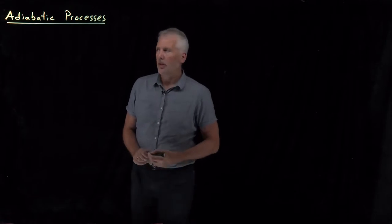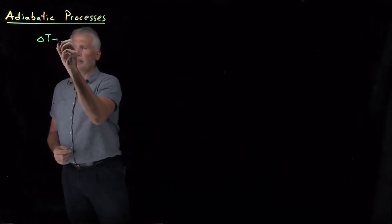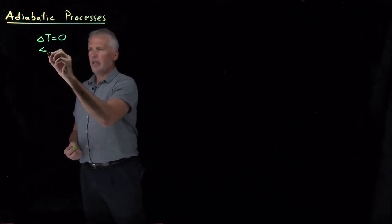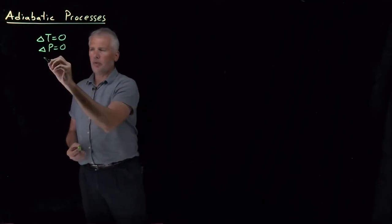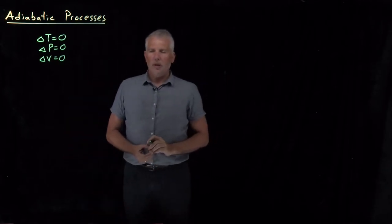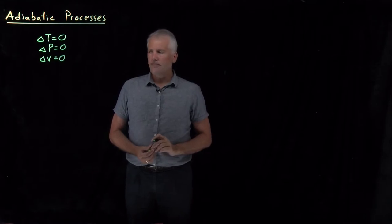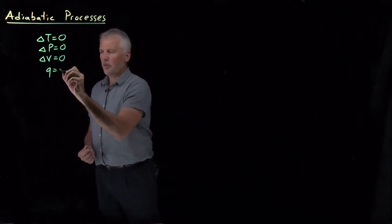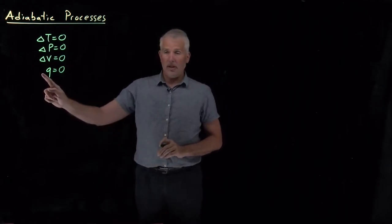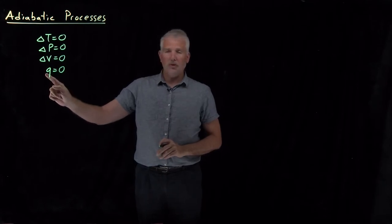We've been talking about lots of different types of processes that we can now calculate various thermodynamic quantities for. For example, when we talk about isothermal processes, those are processes which don't experience a change in temperature. We've also talked about isobaric processes which don't change their pressure, or isochoric processes which don't have a change in volume. But there's one additional type of process we haven't talked about yet that turns out to be pretty important, and that's a process where the heat transfer in a process is equal to zero. So notice I don't put a delta in front of this because there's no Q associated with the system that's changing.